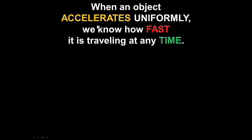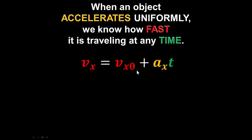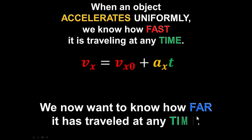What we learned last time was that when an object accelerates uniformly, we know how fast it's going to be traveling at any moment in time. That is given by this equation: the instantaneous velocity in the x direction equals your initial velocity in the x direction plus your acceleration in the x direction times time. This is the velocity you have at this instant. But now we want to calculate how far an object has traveled at any instant in time — distance as a function of time.